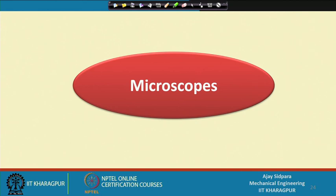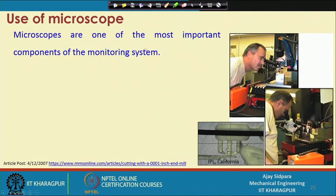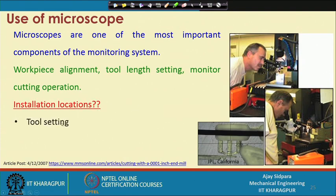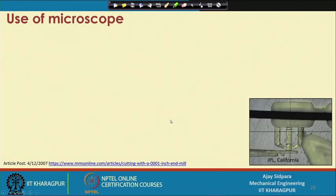Microscopes are also very important components of measurement and monitoring systems. They can be used for workpiece alignment, tool length setting, or monitoring cutting operations. Two microscopes are typically installed: one aligned with the z-axis of the cutting tool for tool setting measurement, and another mounted on the side to monitor the cutting operation. A crosshair on the microscope is used for alignment purposes.